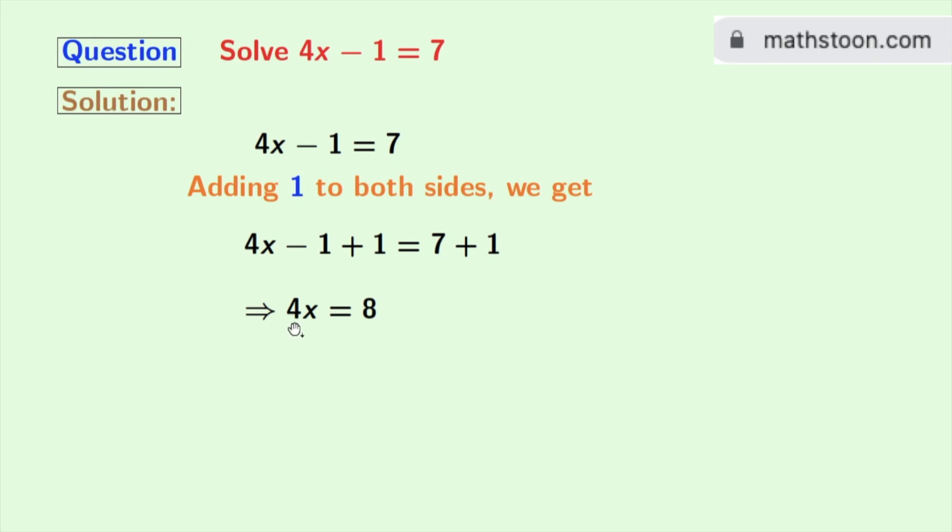Now as the coefficient of x is 4, we will divide both sides by 4. Doing so we get 4x divided by 4 is equal to 8 divided by 4.